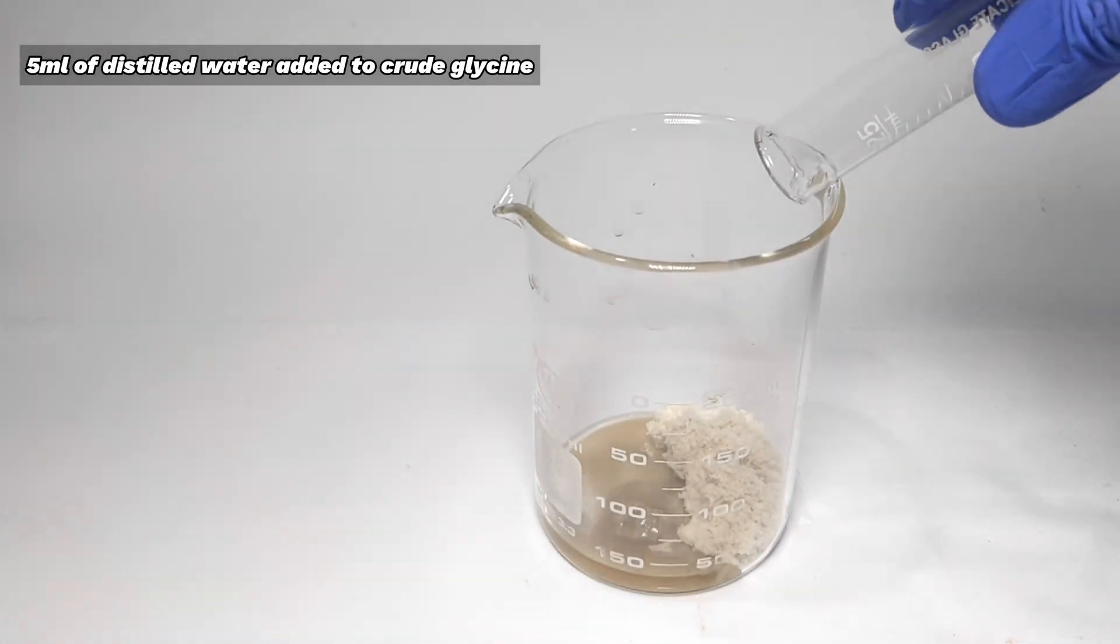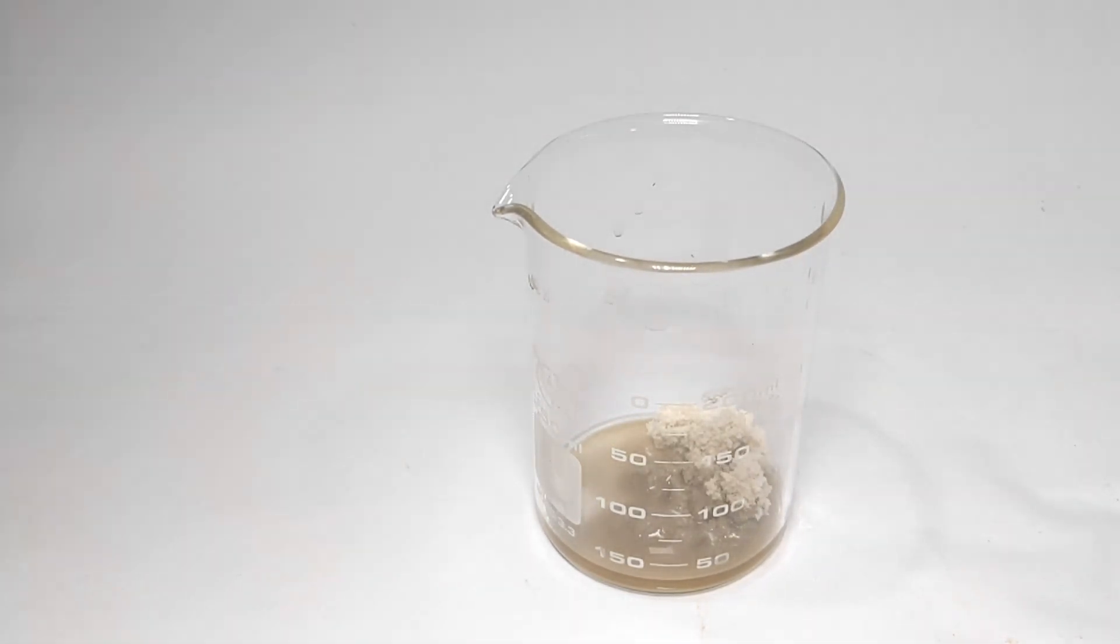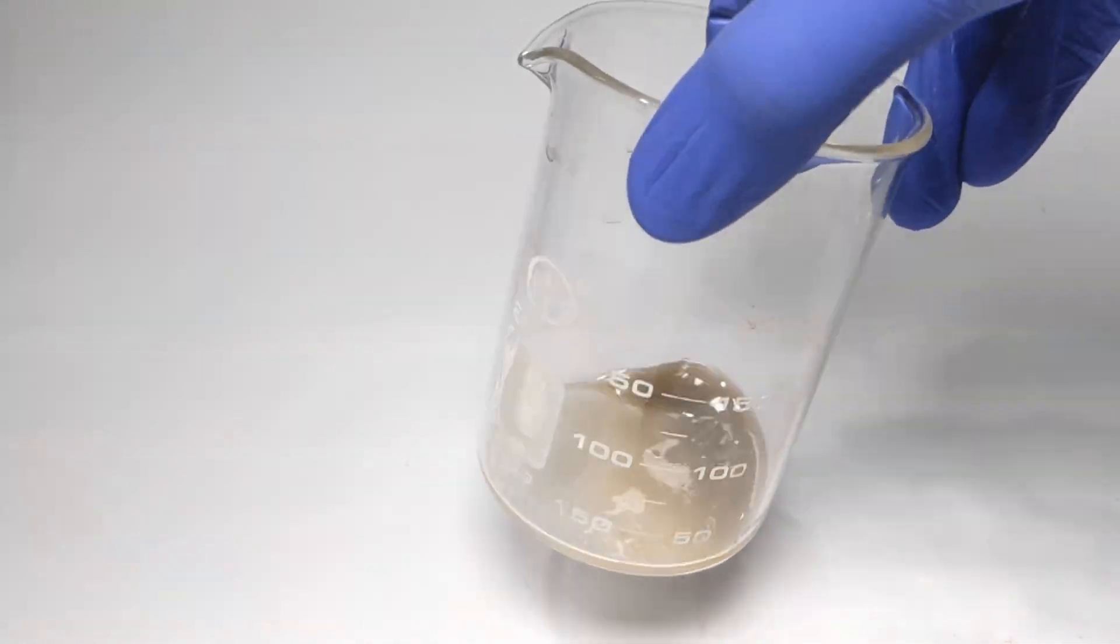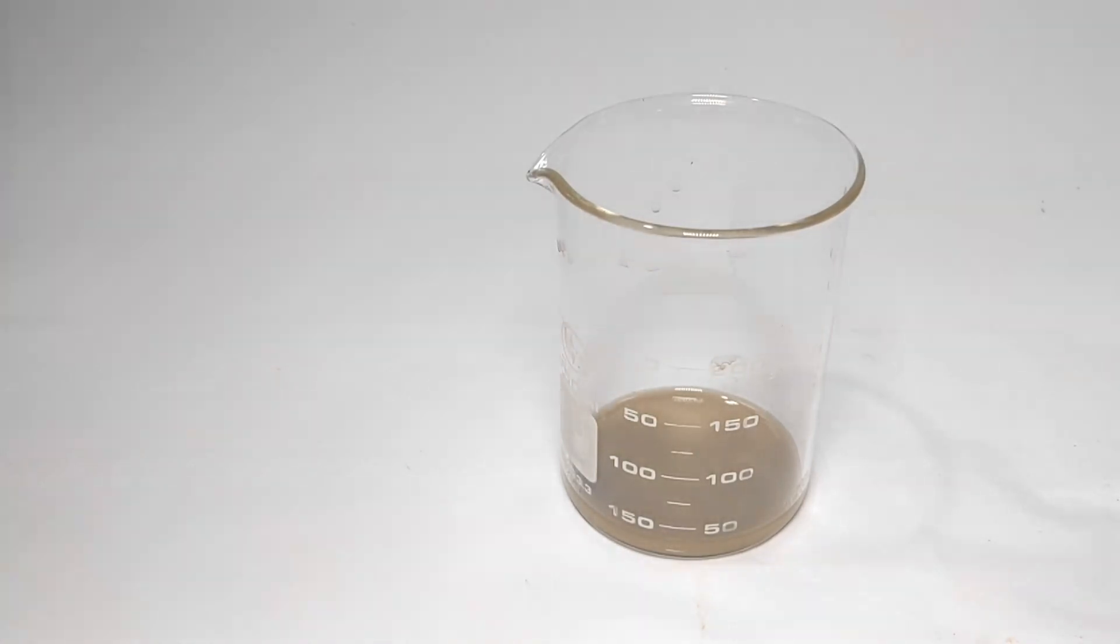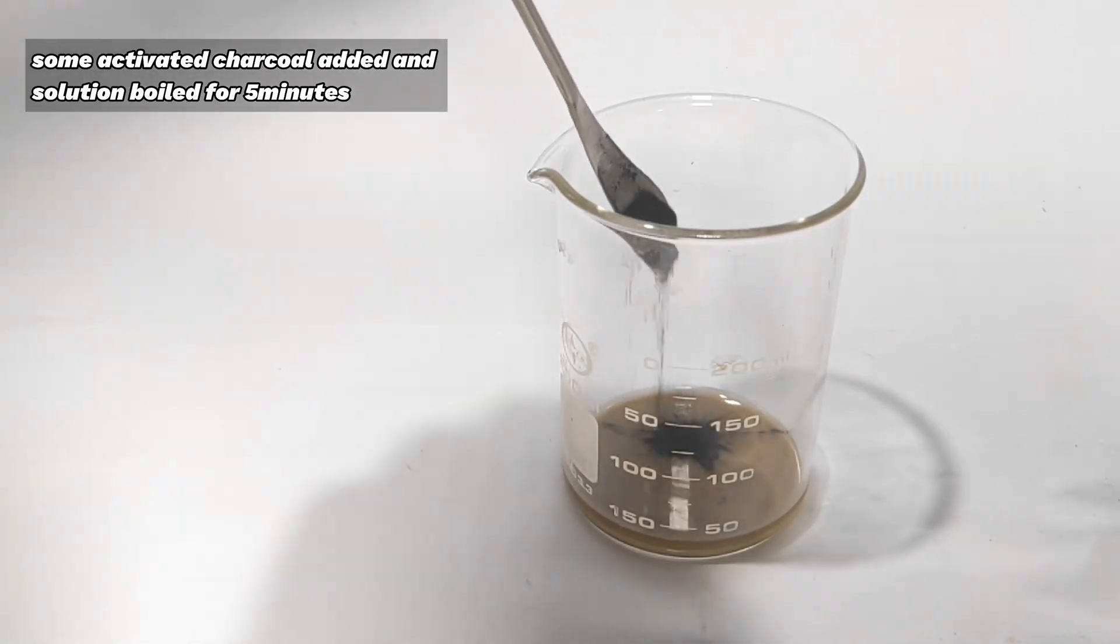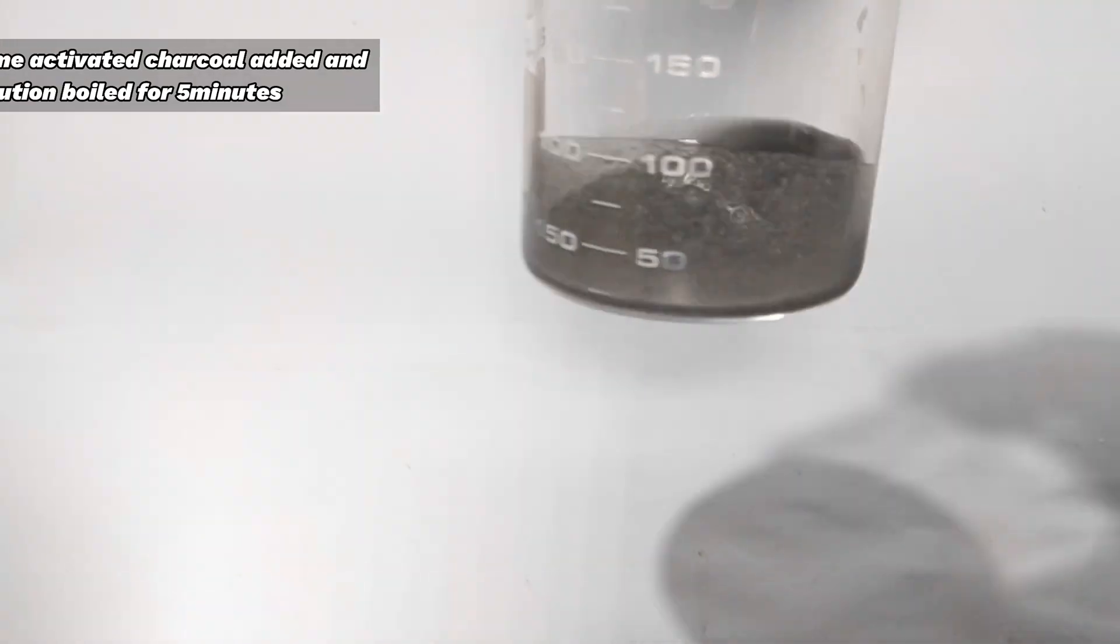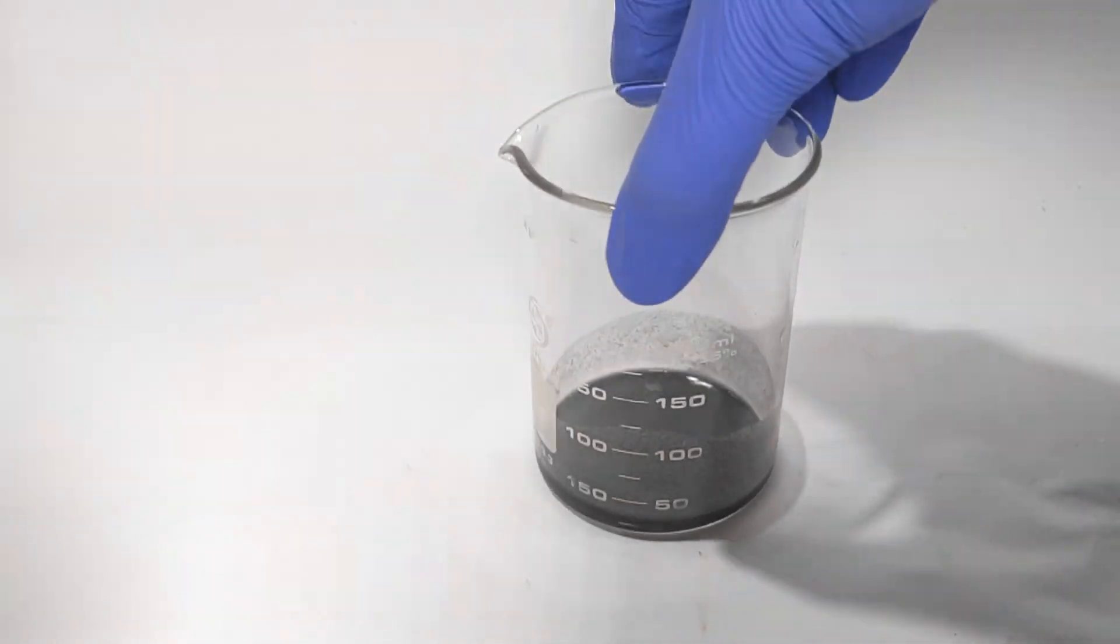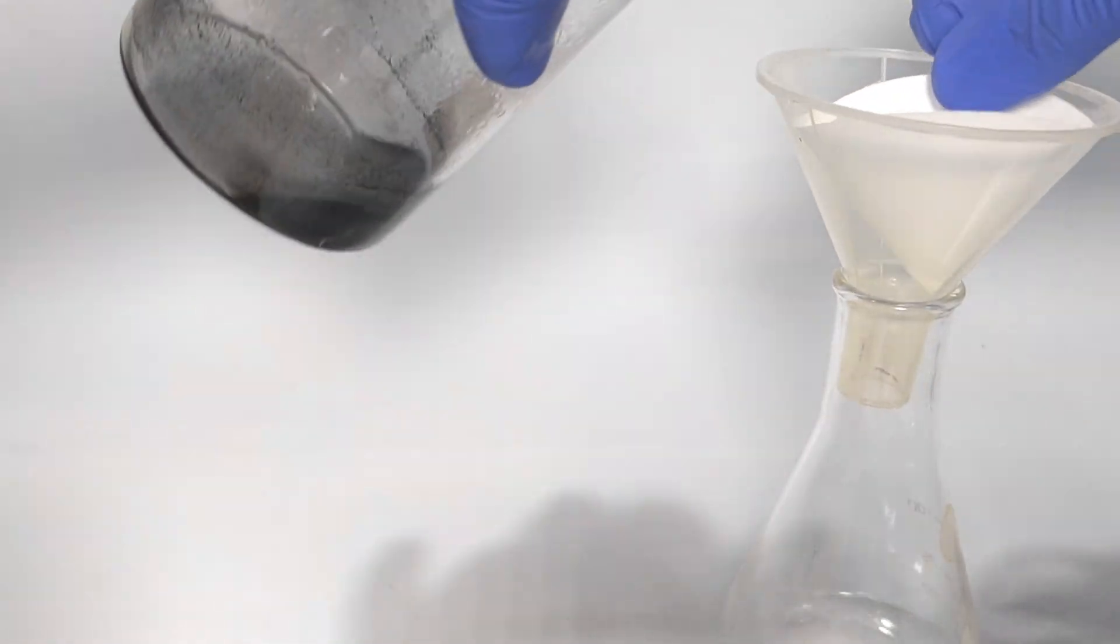For that, 5 milliliters of distilled water was added to the compound. Glycine is highly soluble in water and everything dissolved and a clear dark solution was obtained. Now a few grams of activated charcoal was added and the solution was boiled. Then it was filtered. Activated charcoal helps in removing most of the colored impurity and this would make the compound much whiter in color.